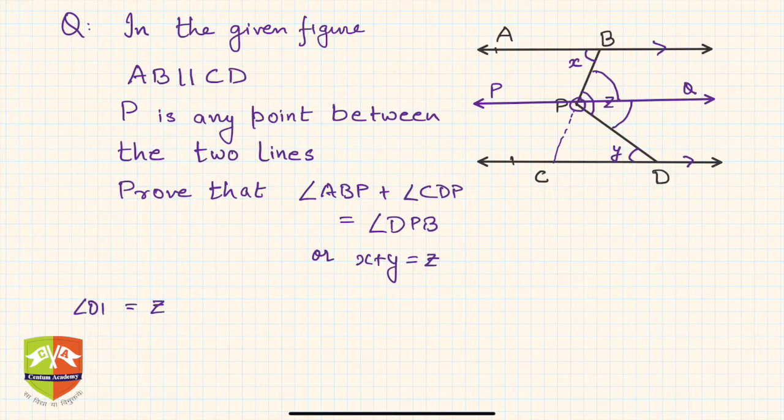Q plus angle DPQ. You can see BPQ plus DPQ, the sum comes out to be z. Now if you look carefully, AB is parallel to PQ. That's why we did this construction.